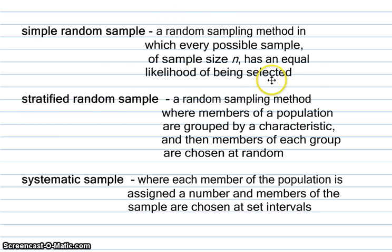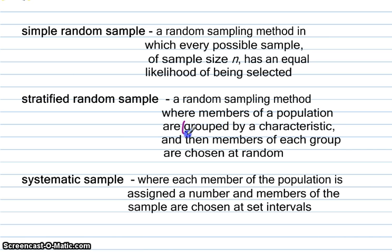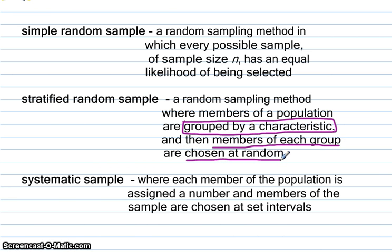Simple random samples are the ones we've been using since elementary school — marbles in a jar and you pick one out. Stratified random is kind of like cluster and simple random put together: we are grouping by characteristics, but the key difference from clustering is that only some members of each group are chosen. Systematic sampling is when each person is assigned a number and members of the sample are chosen at set intervals — that's what makes it systematic.